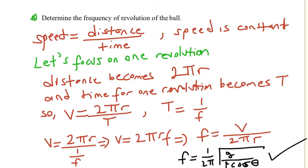For this section, we are going to determine the frequency of revolution of the ball. The simplest formula for speed is distance over time. And speed is given as constant for this question. If you focus on one revolution, it wouldn't change the result since the speed is constant.